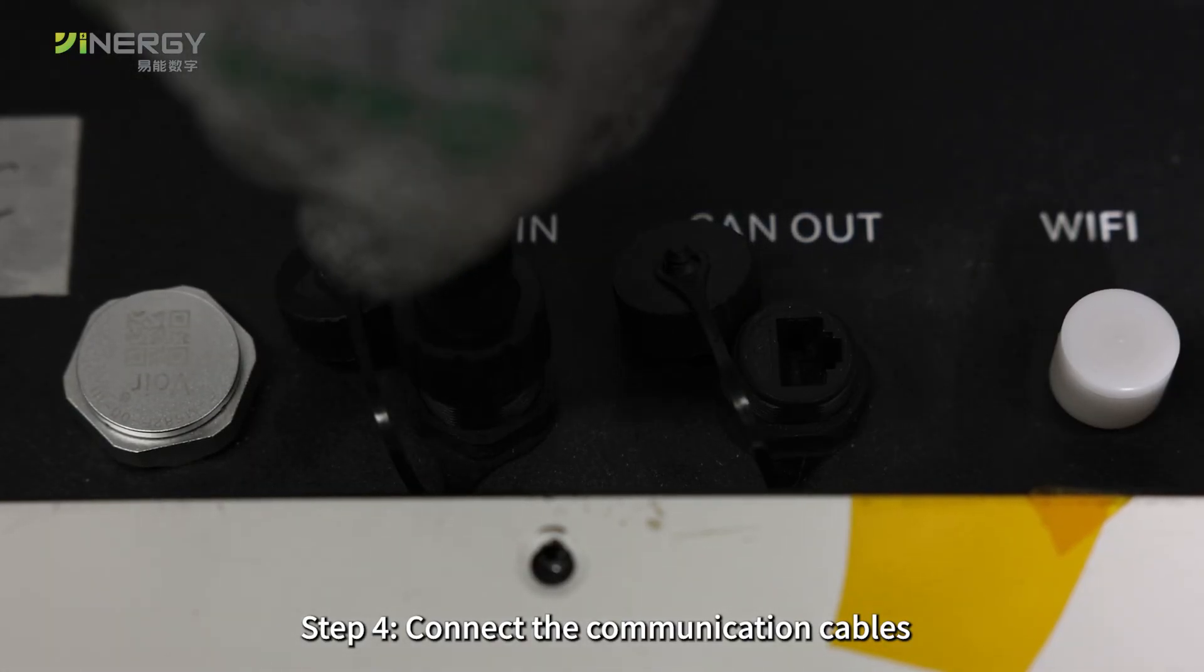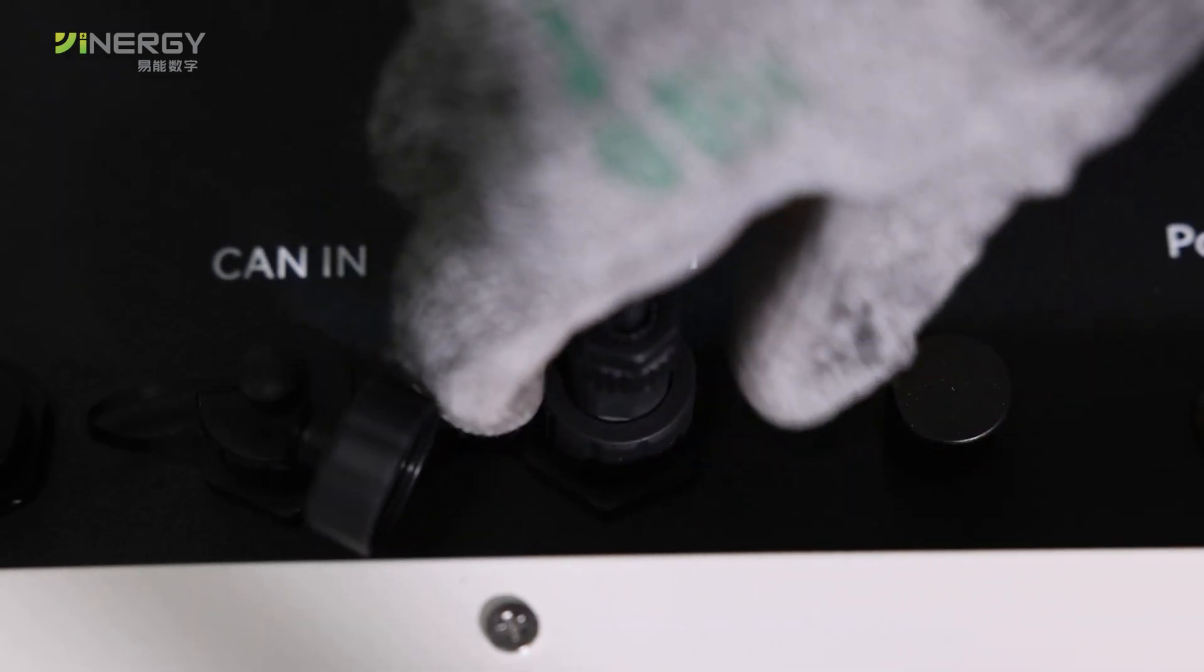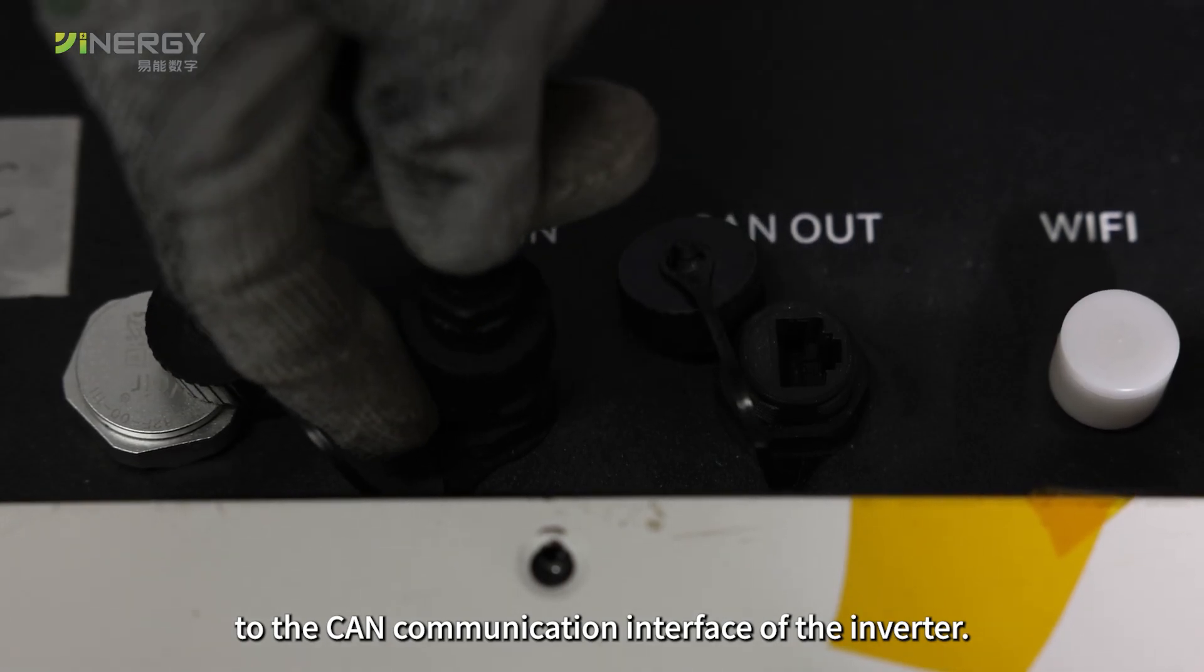Step 4: Connect the communication cables. Connect the two batteries in sequence via the CAN interface. Connect the CAN-ion port of the battery to the CAN communication interface of the inverter.